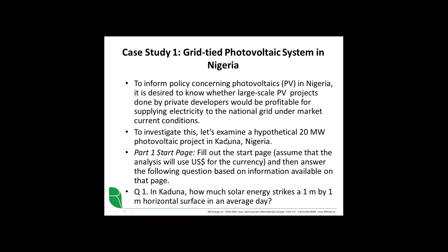It's a grid-tied photovoltaic system, and I've chosen Nigeria as an example. I don't know entirely the situation in Nigeria, so I've based it on what I could find over the internet — there may be some errors and assumptions. What's important is that you understand how to use the tool. The idea is that a policymaker might want to determine whether current market conditions in Nigeria are sufficient to lead to profitable large-scale PV projects. A private developer would do a 20-megawatt photovoltaic project, connect it to the grid, and we're asking: are they going to earn enough money selling electricity to make that a profitable project?